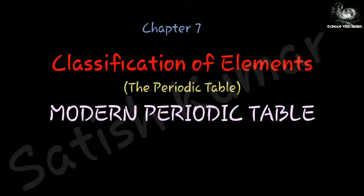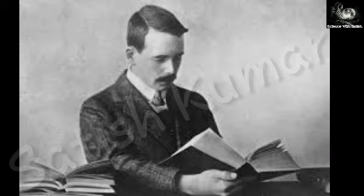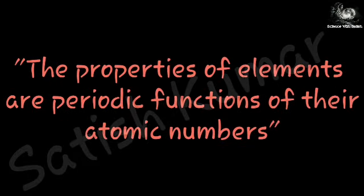This video is the third part of chapter 7 on classification of elements. In this video I am explaining the modern periodic table, which was proposed by H.J. Moseley. The law of the modern periodic table states that the properties of elements are periodic functions of their atomic numbers. The main difference between Mendeleev's and Moseley's periodic table is that Mendeleev arranged elements on the basis of atomic masses, but Moseley arranged them on the basis of atomic numbers, which rectified the defects of Mendeleev's periodic table.